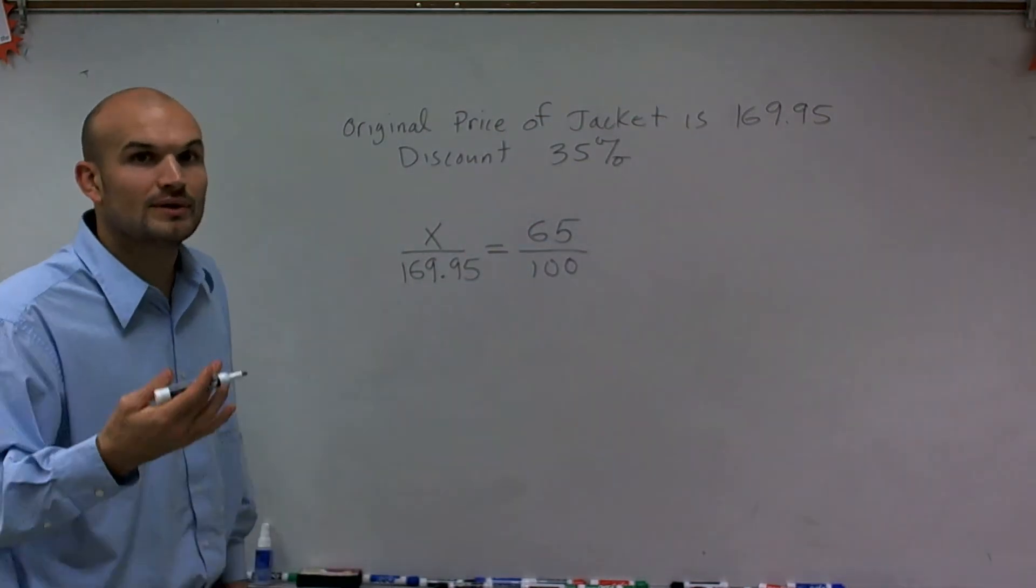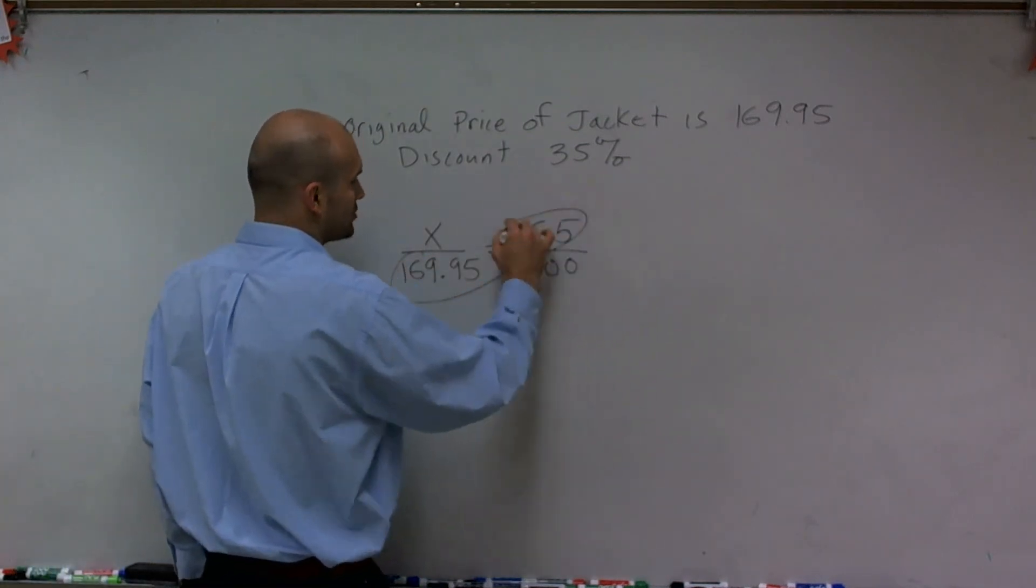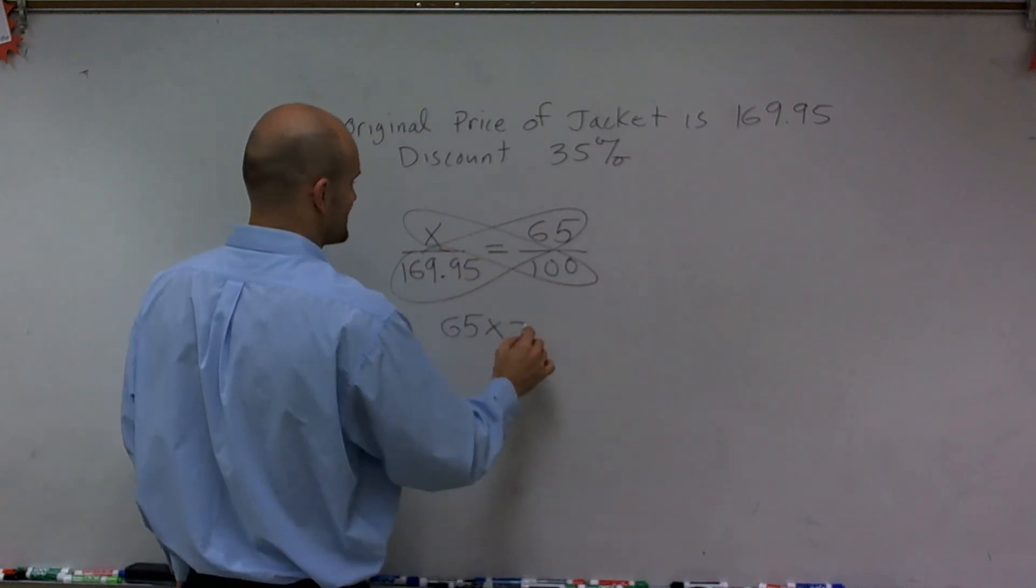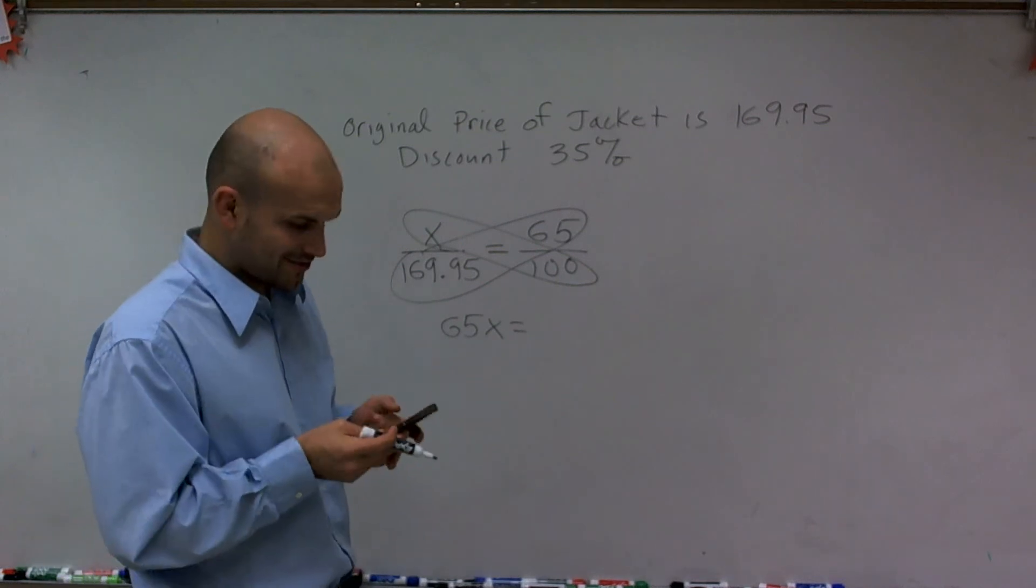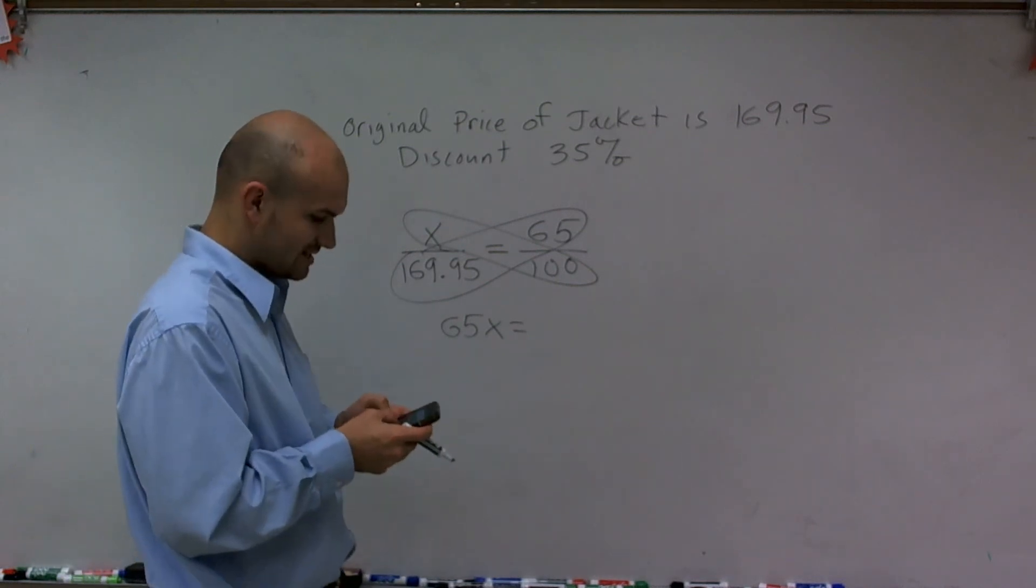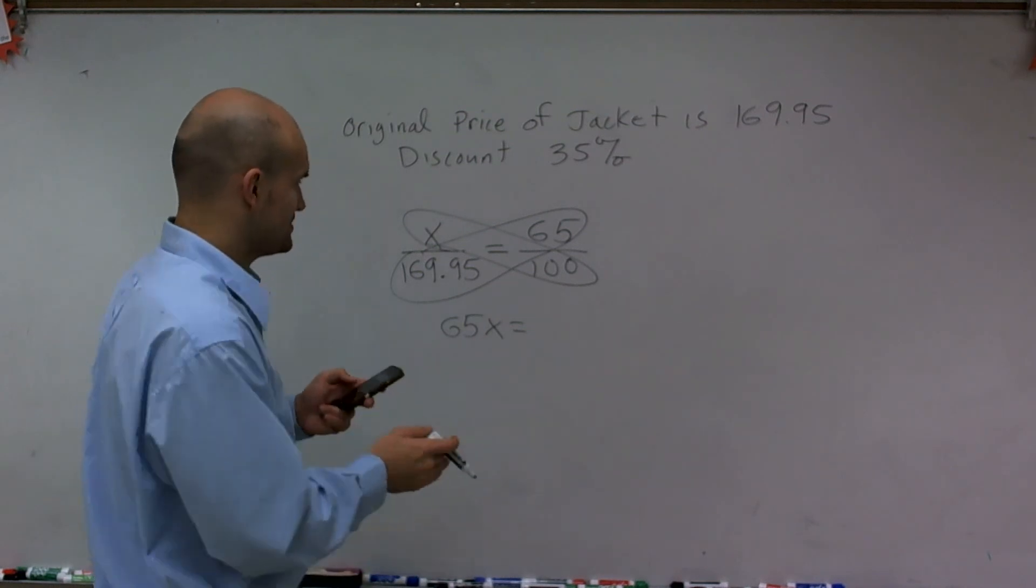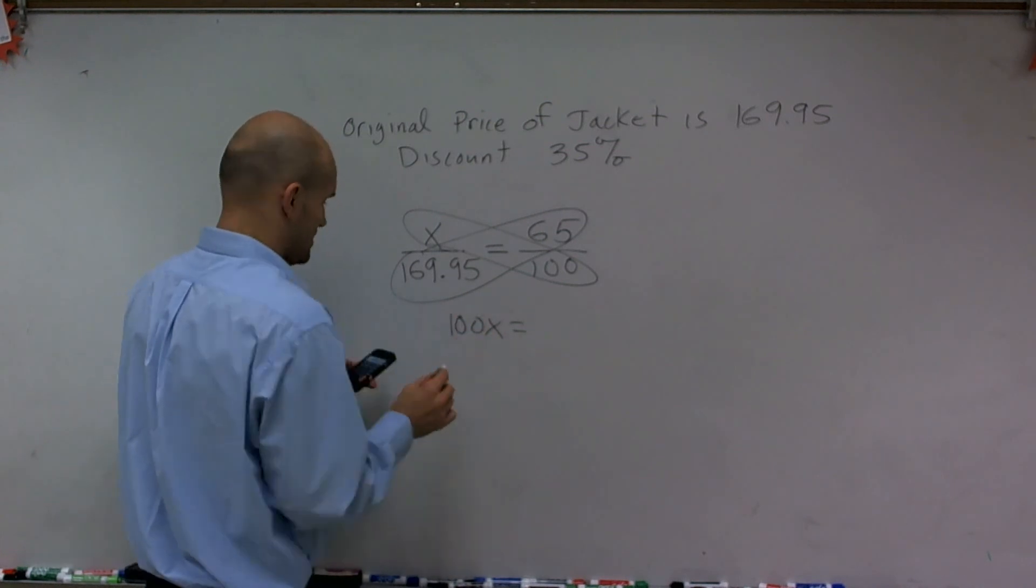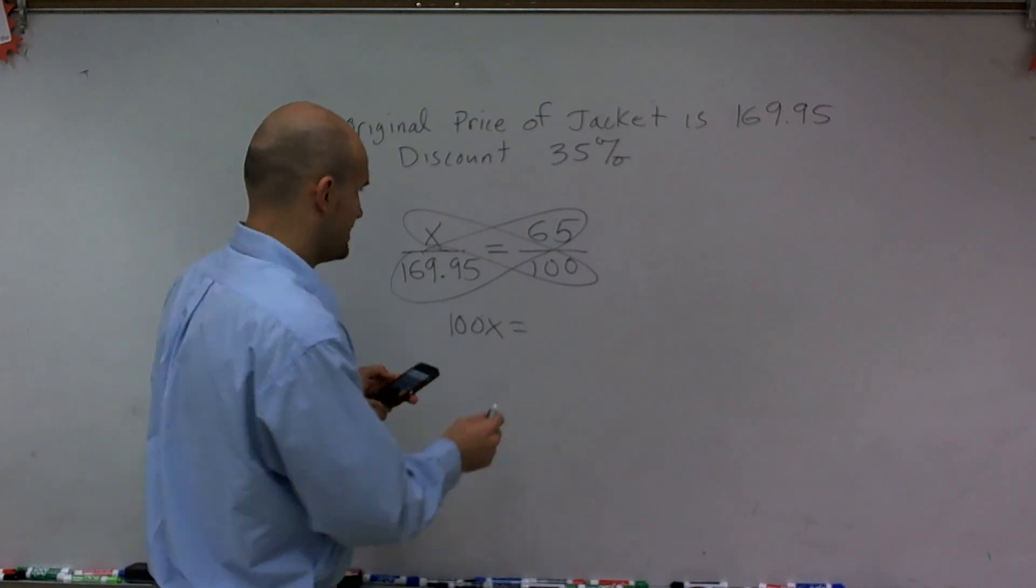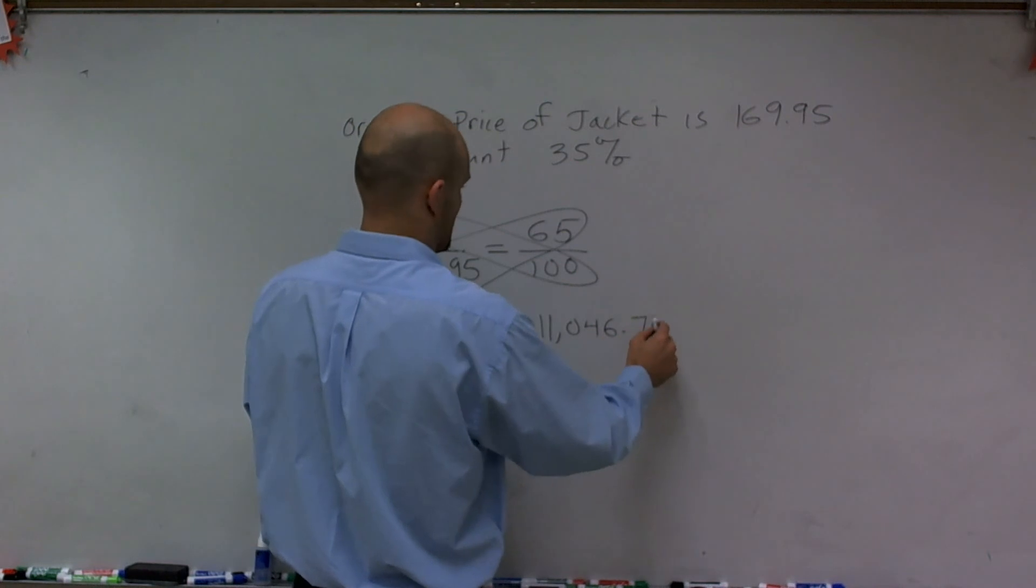So now what I can do to solve this is simply solve proportions. I can cross multiply. And therefore what I'll have is 100x, which is equal to, and I'm just going to use my nice little handy calculator I have here. So I'll do 169.95 times 65, and I get 11,046.75.